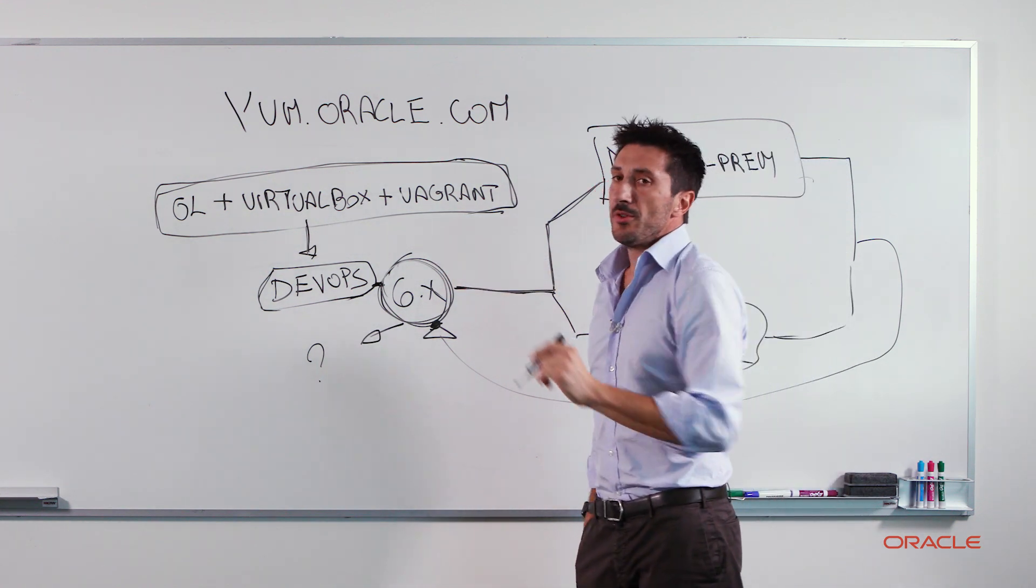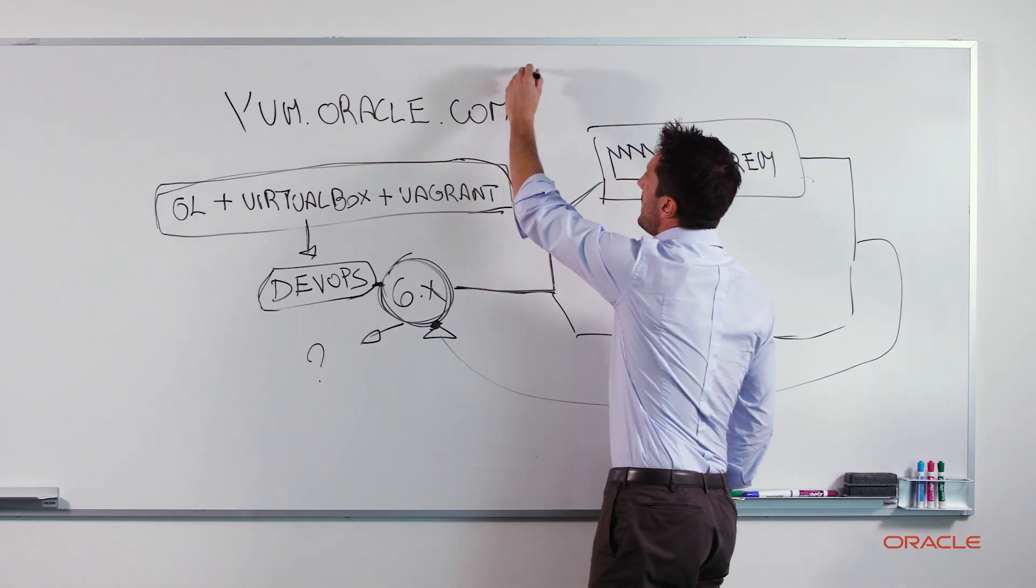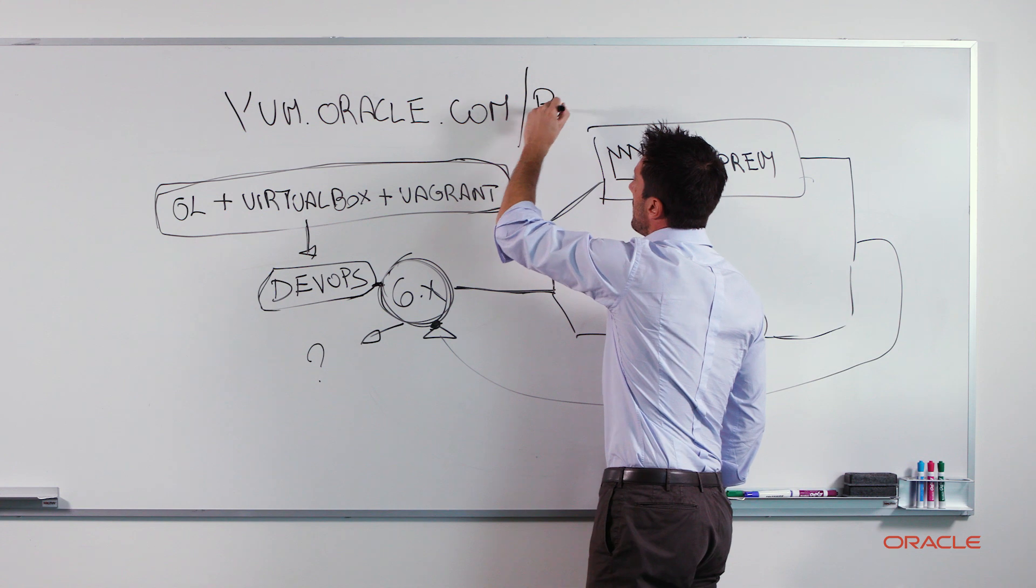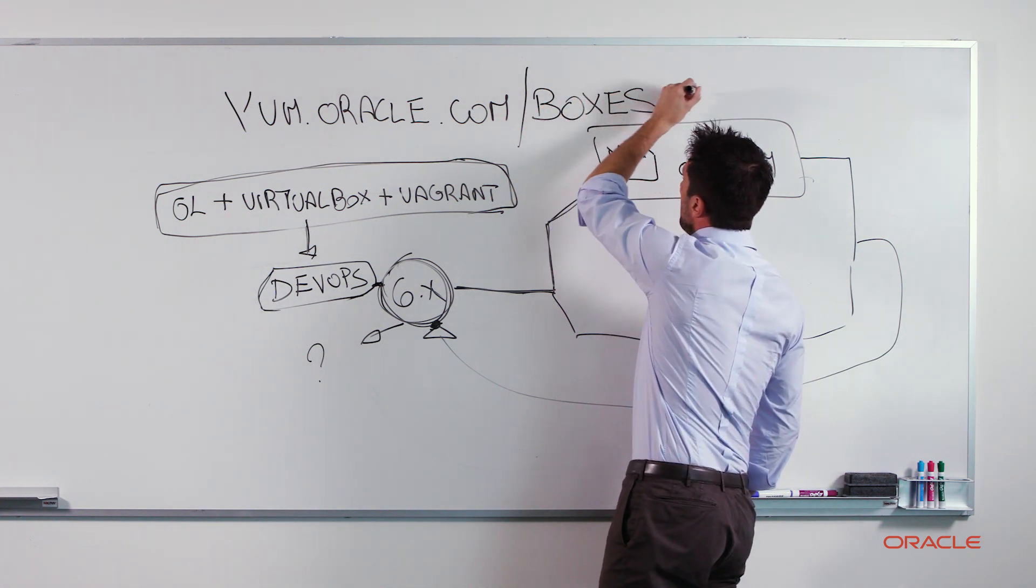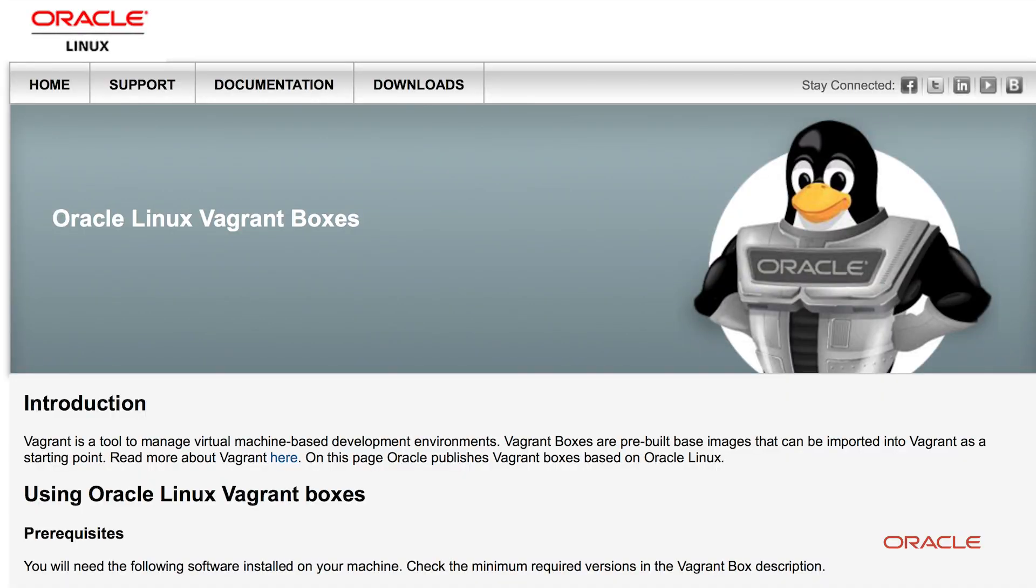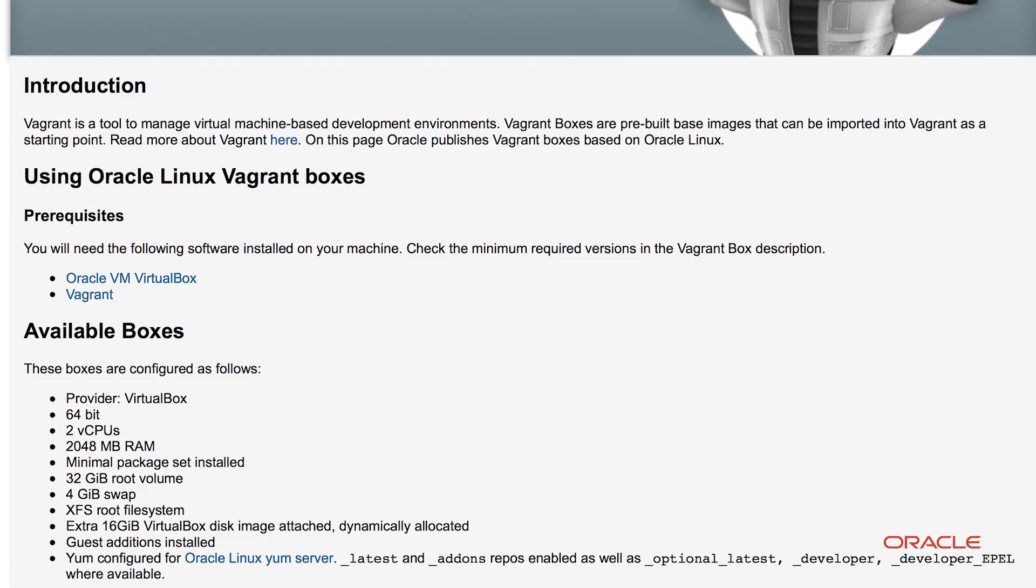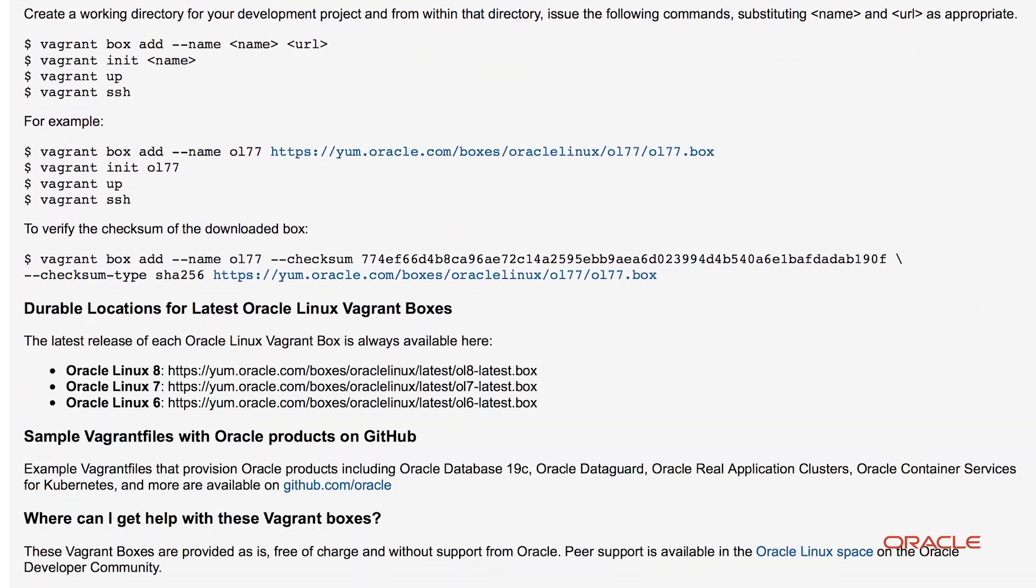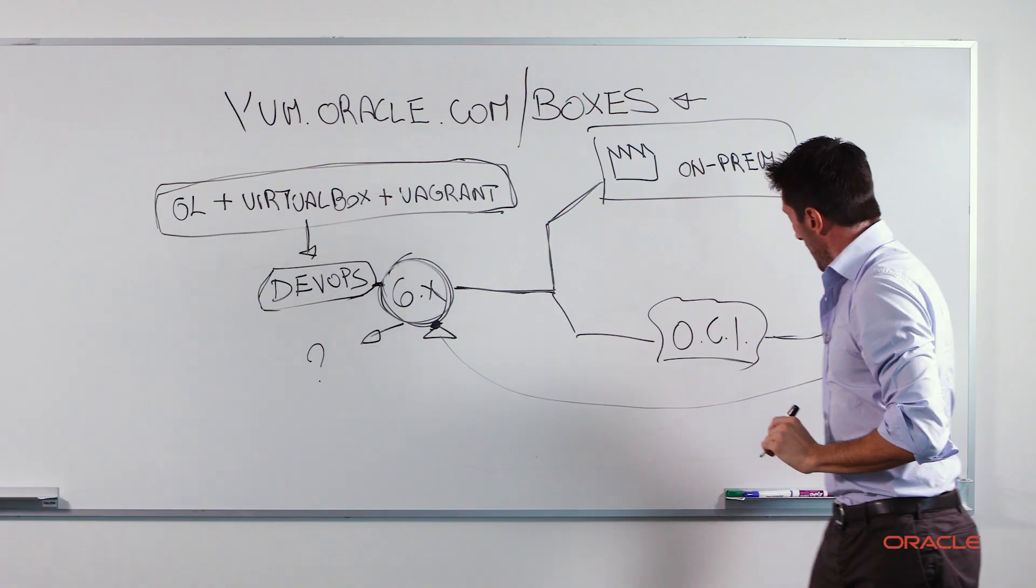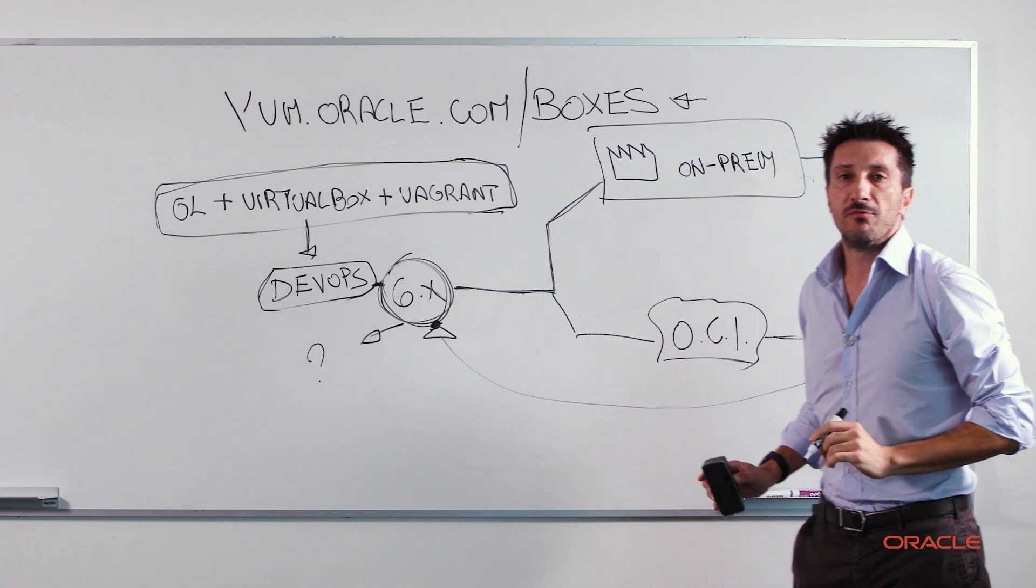It's also important to know that lately we also worked to get our official Vagrant boxes available, dedicated to Oracle Linux operating system, and all of them are available on vagrantup.com slash boxes. And this is not the only thing we are doing for developers.